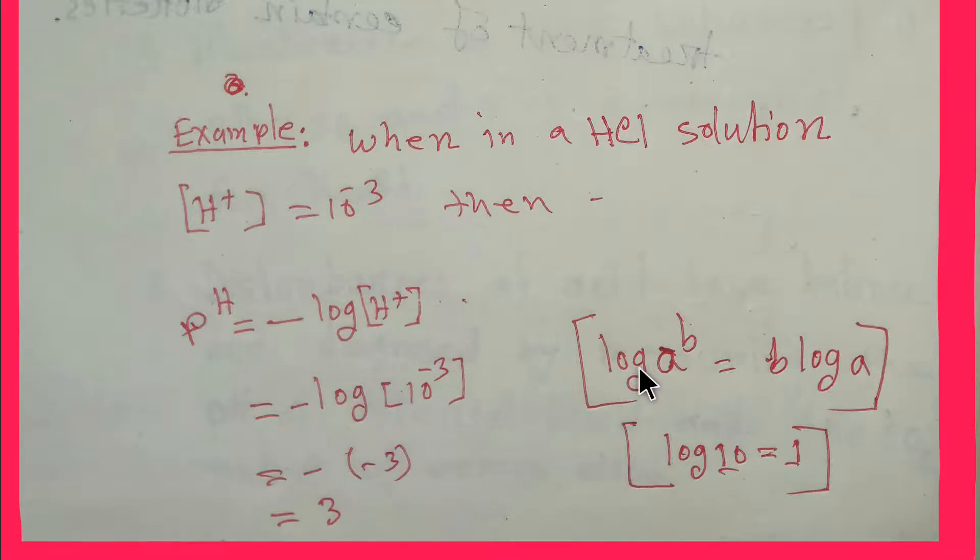You know that there is a formula log a to the power B equals B log a, and also we have to remember that log 10 equals 1. However, we are getting pH 3 here. For HCl, you know that HCl is a strong electrolyte, it dissociates in water completely.